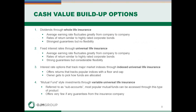Cash value builds up in several different ways. First, there's whole life insurance — the traditional first generation of permanent life insurance. The insurance company collects the premium, takes out expenses and the cost of insurance, then invests the remaining amount in whatever they choose. You as the insured have no say in where it gets invested. They return a dividend back to policyholders, which is not a guaranteed percentage and can fluctuate from year to year — that dividend is how your cash value builds.